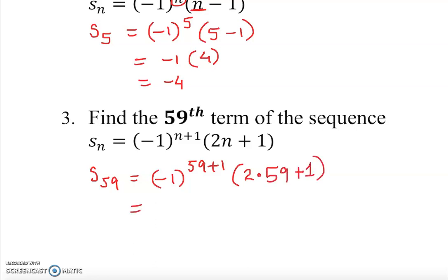That should give us 119, so s of 59 is 119. Let me show you here with the calculator also quickly.